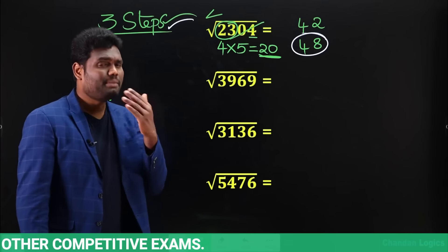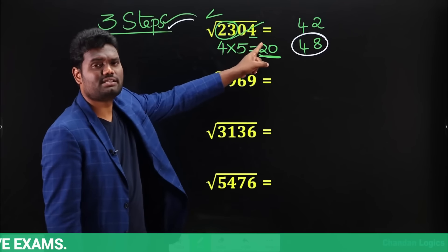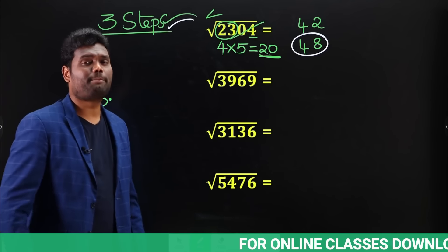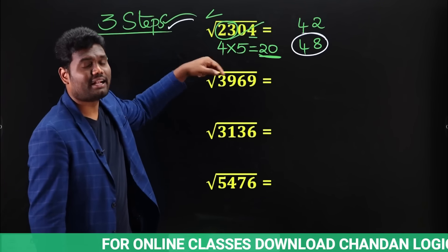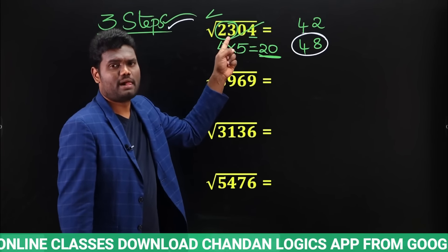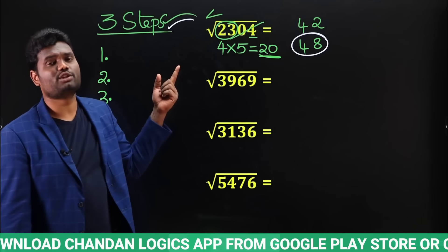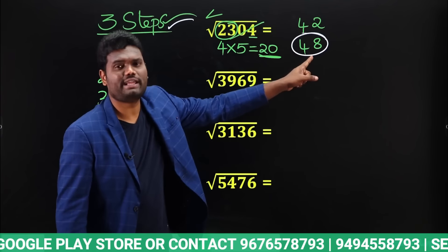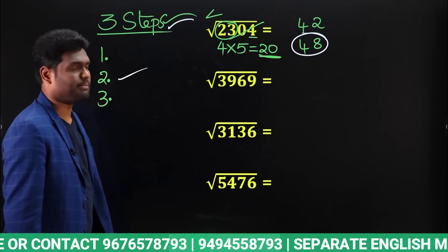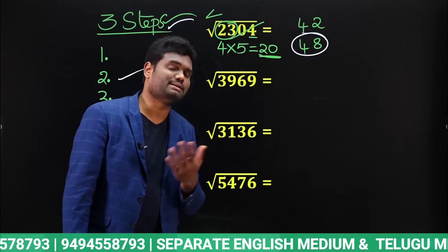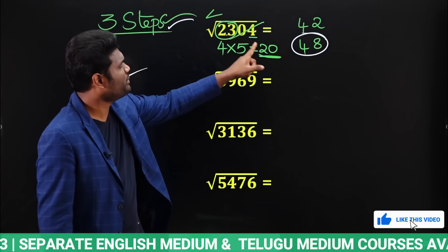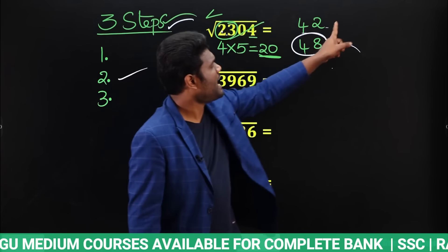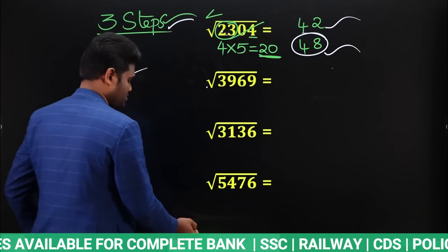To repeat: Step 1 — check last digit, note down possibilities, strike off last two digits. Step 2 — find perfect square close to the remaining number and less than it; write down that number (e.g., 4), giving two candidates (42 or 48). Step 3 — multiply that number by the next (4×5=20); compare your remaining value with 20. If bigger → bigger square; if smaller → smaller square. That's it — nothing more.